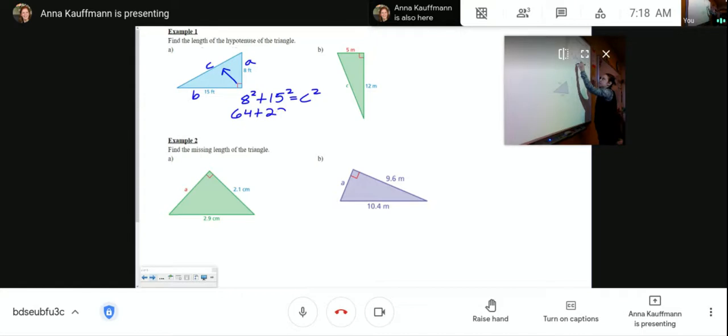64 plus 225 equals C squared. 64 plus 225 equals 289 equals C squared. And then what's the opposite of a square? The opposite of a square is a square root. The square and the square root cancel, and the square root of 289 is 17. So this side length is 17 units long.